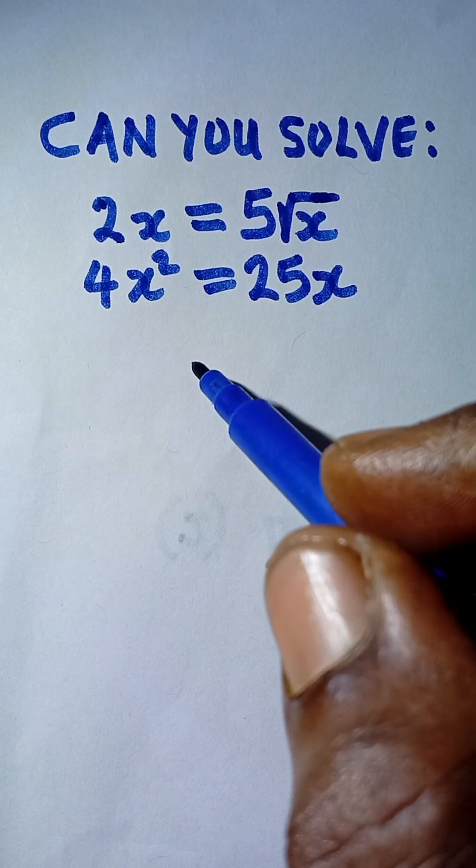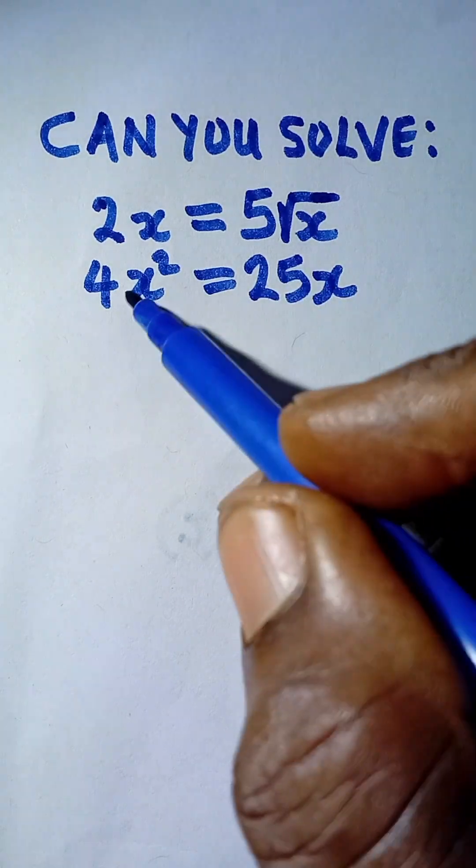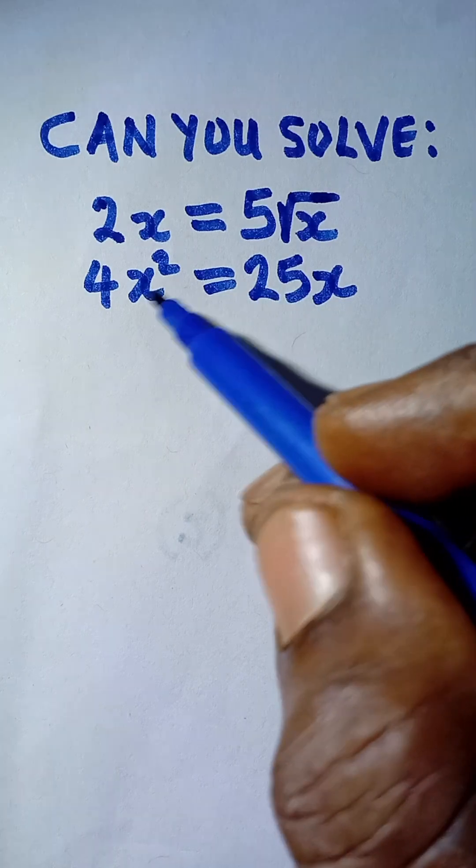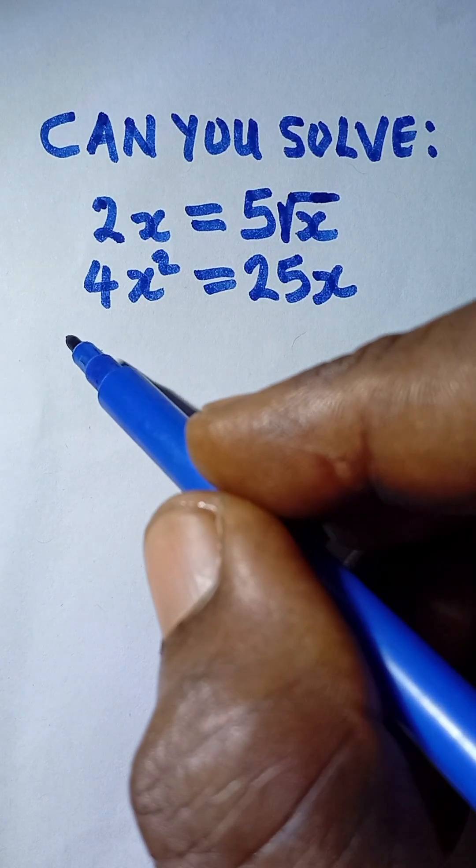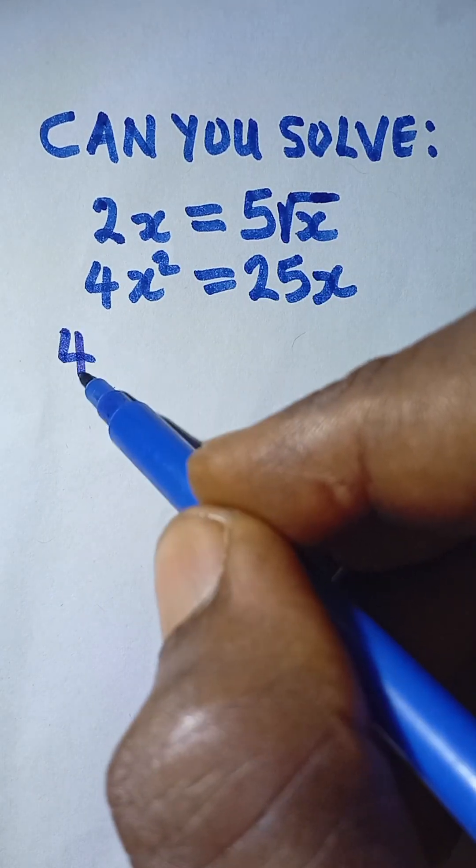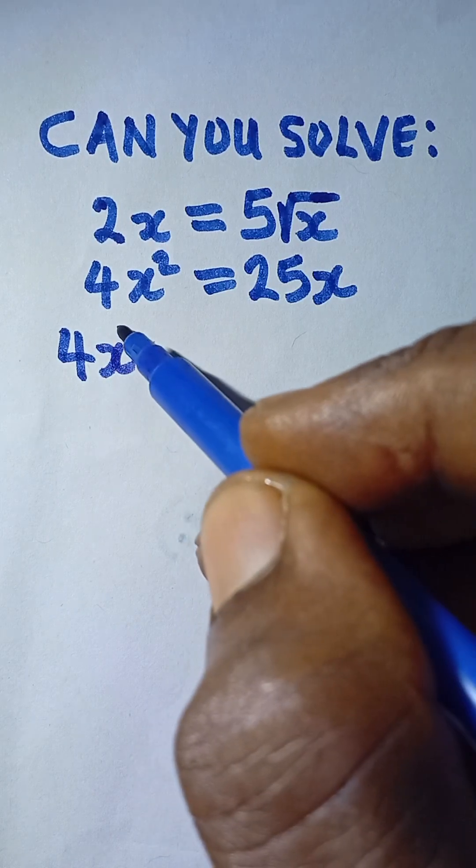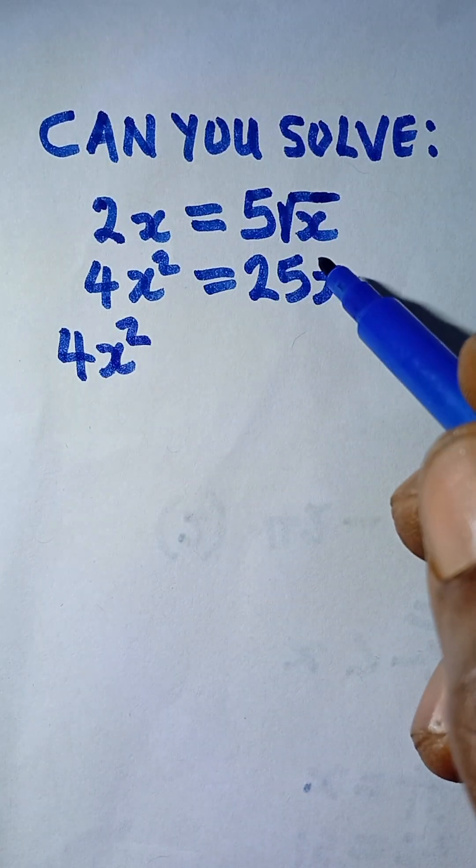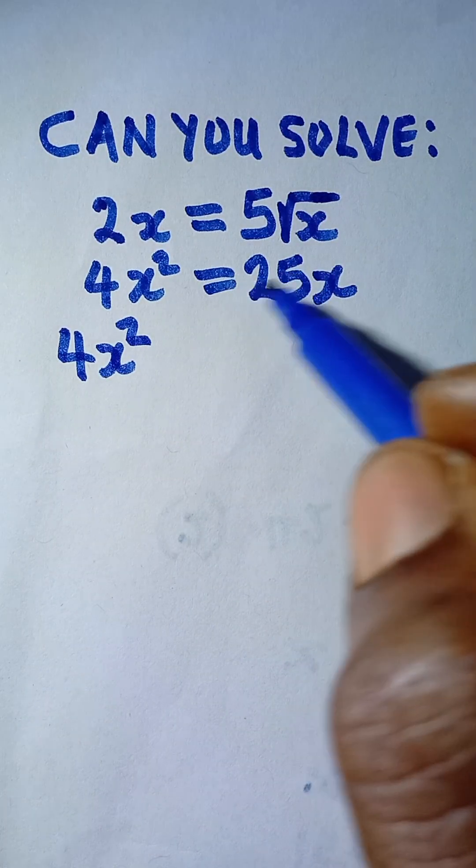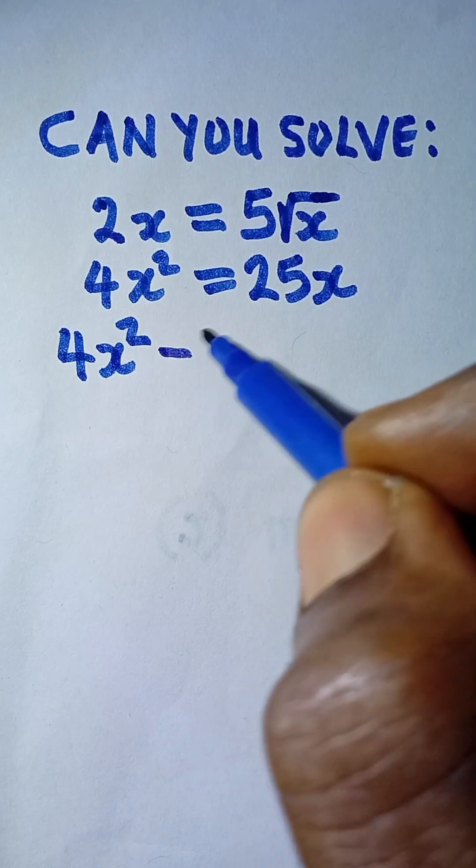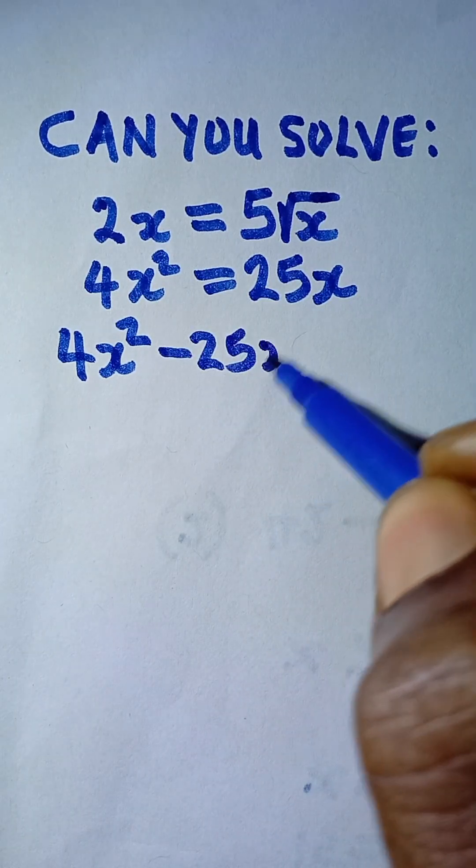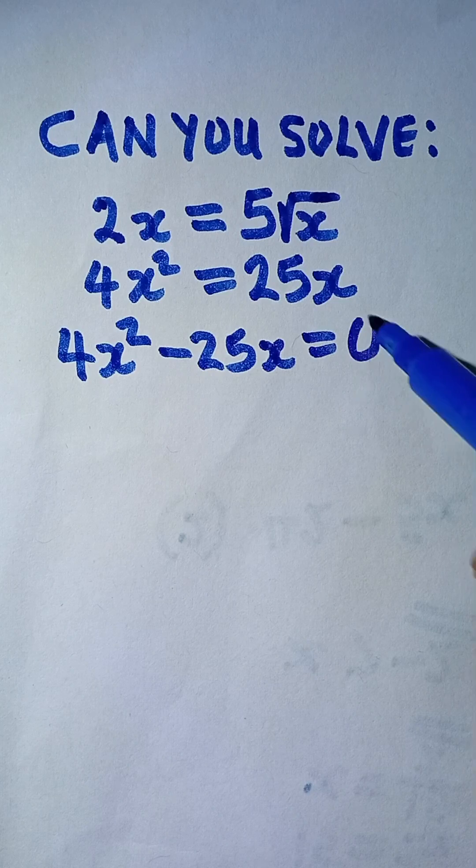Now the next thing to do is to check this equation and see that it is exactly a quadratic equation. So I'm going to say 4x squared. To solve a quadratic equation, we equate it to 0. So I take this one to this side, it becomes minus 25x, and that is equal to 0.